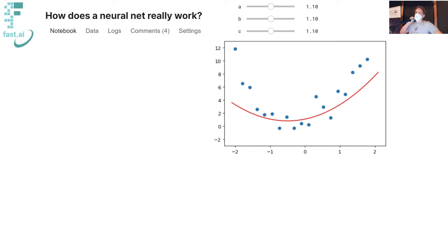Hugging Face Transformers doesn't have the same layered architecture that FastAI has, which means the top-tier API that you'll be using most of the time is not as ready to go for beginners as you're used to from FastAI. But that's actually a good thing. You're up to lesson four — you know how gradient descent works and how parameters are learned as part of a flexible function. You're ready to try using a somewhat lower-level library that does a little bit less for you.